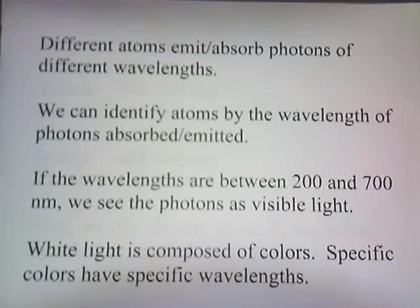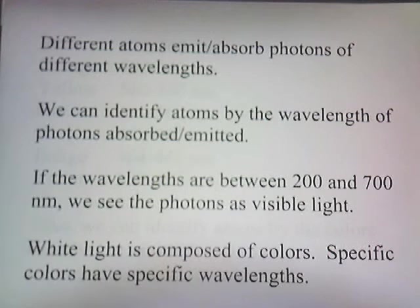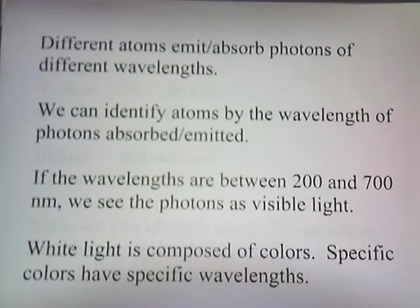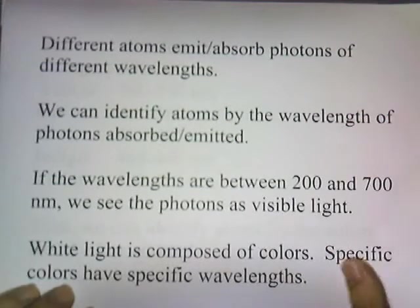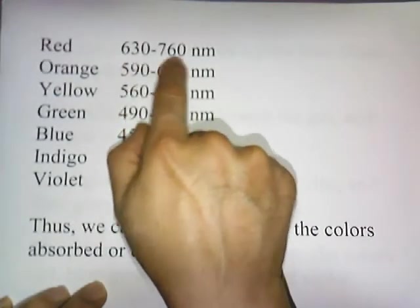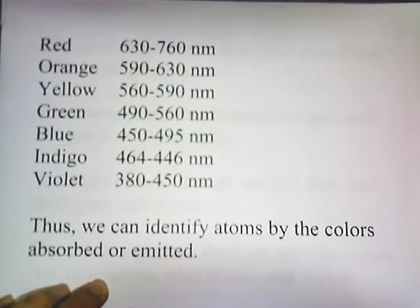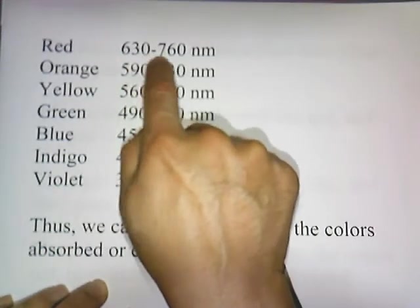Different atoms emit or absorb photons of different wavelengths. We can identify atoms by the wavelength of photons absorbed or emitted. If the wavelengths are between 200 and 700 nanometers, we see the photons as visible light. White light is composed of colors, and specific colors have specific wavelengths. If the photons have wavelengths between 630 to 760 nanometers, you're going to see the color red. You'll see different shades of red depending on the wavelength.